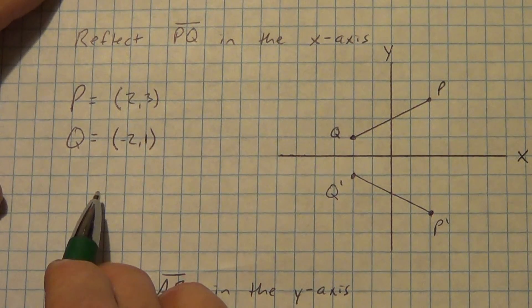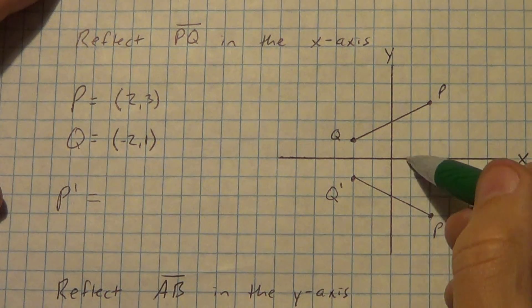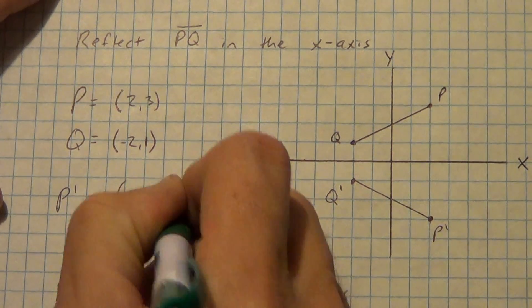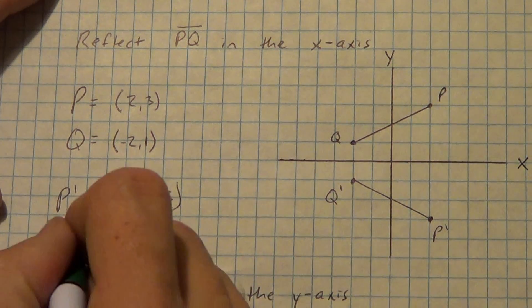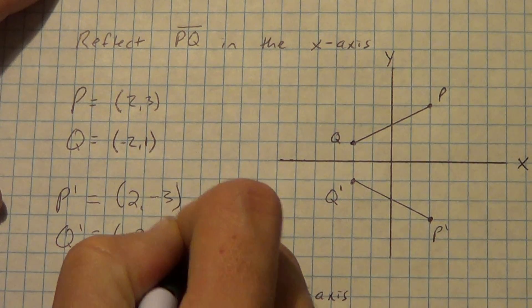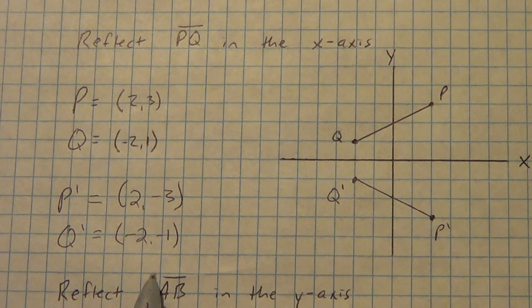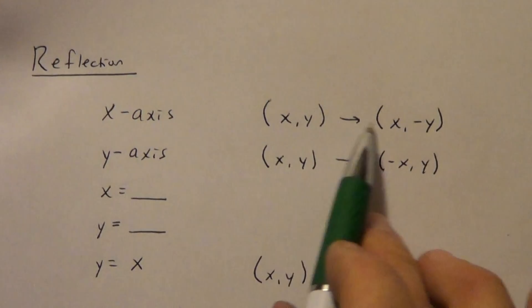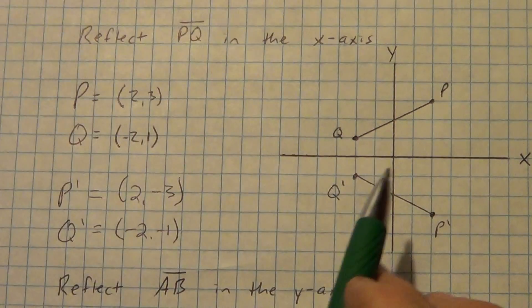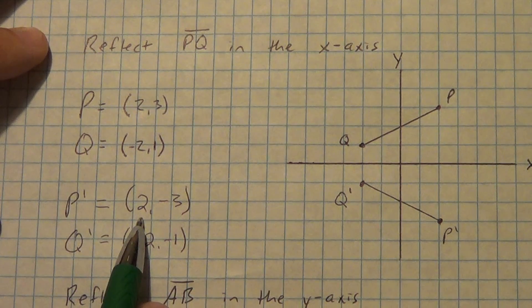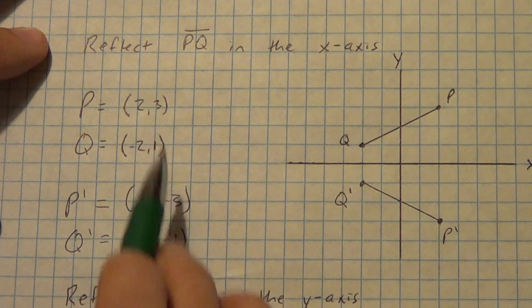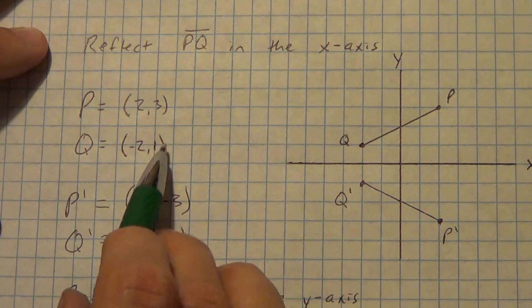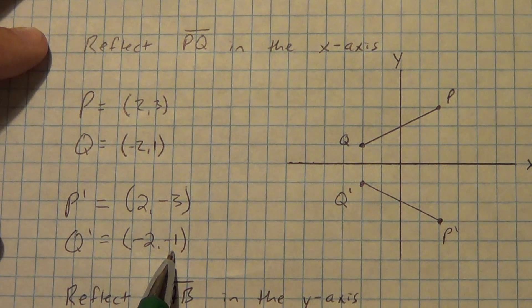It should look like all we did is take this line segment and flip it down. These should be congruent to each other. So P prime is at (2, negative 3) and Q prime is at (negative 2, negative 1). We talked about this — when you do a reflection in the x-axis, the x stays the same and the y changes its sign. The x stayed the same and the y value 3 changed its sign to negative 3. Same with negative 2 and 1 changing to negative 1.